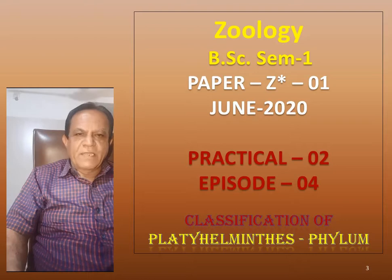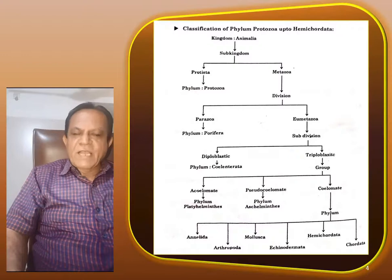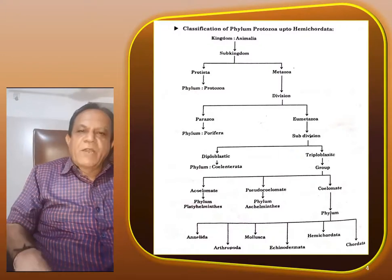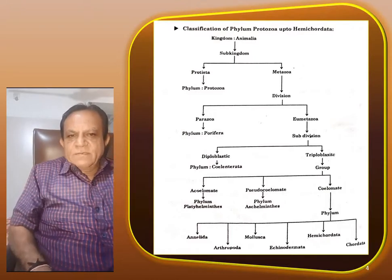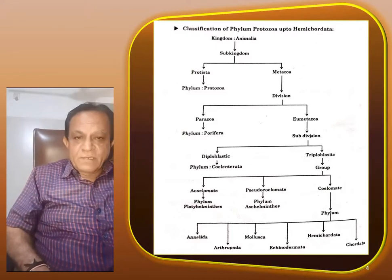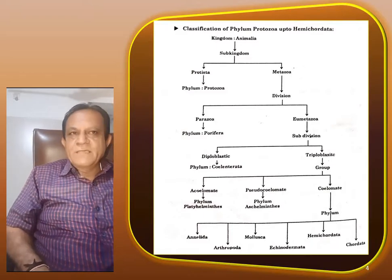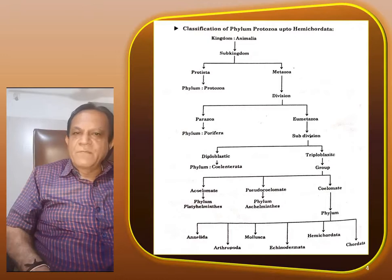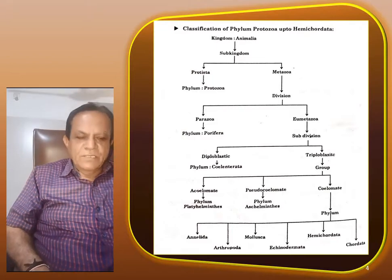This is the chart for classification of Kingdom Animalia. Now you are familiar with this chart. We have so many times discussed this type of chart, how to classify the animals with the help of this chart. So Kingdom Animalia, Sub-Kingdom Protozoa and Metazoa, Division Parazoa and Eumetazoa, Sub-Division Diploblastic and Triploblastic, Group Acoelomate, Pseudocoelomate and Coelomate.